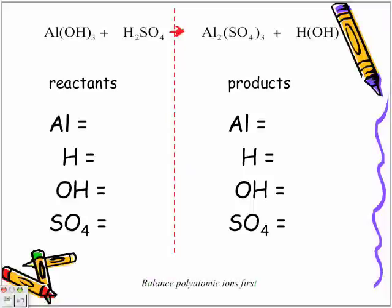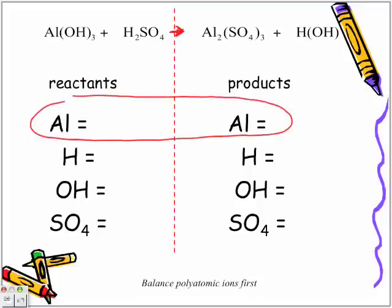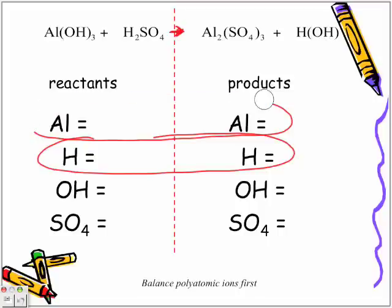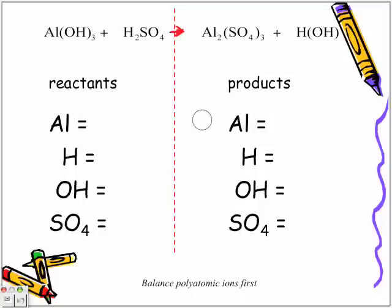We're going to list the atoms that are found on both sides. And if you notice, they're both the same. Another rule I like to follow is to list my atoms in the same order. By listing the same atoms in the same order, it allows me to find pretty much the comparison between the two atoms and the two sides.